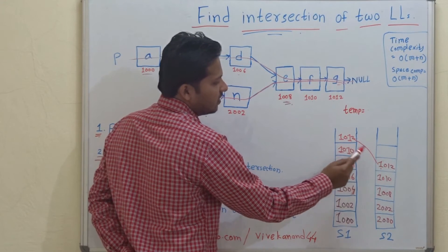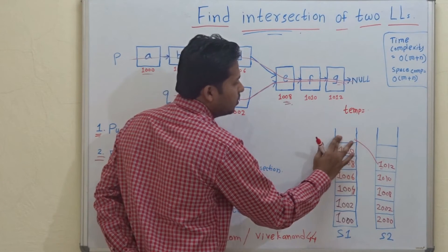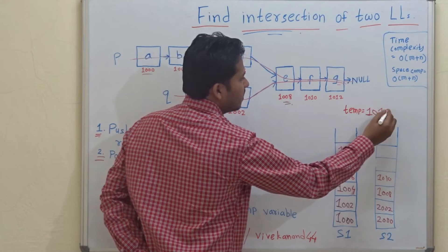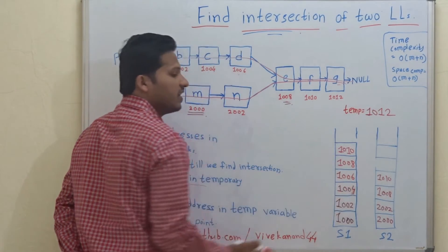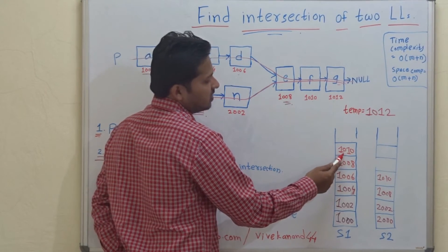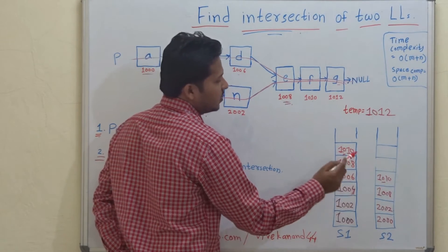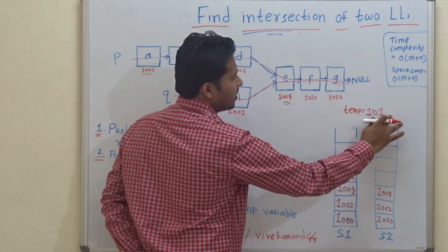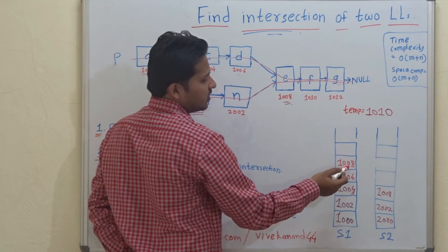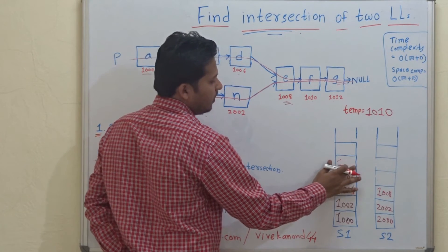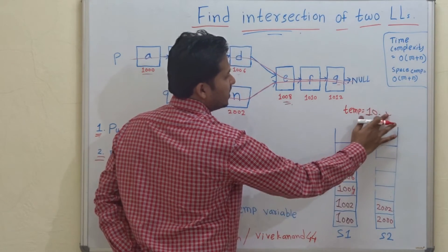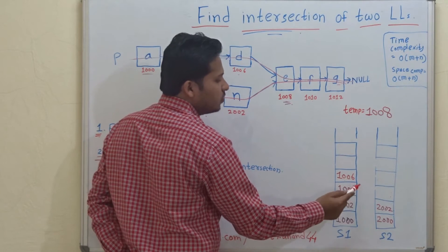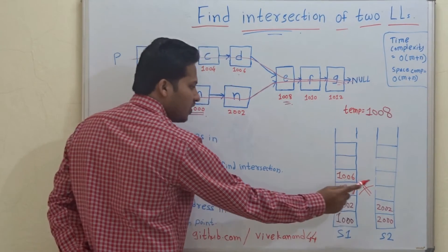Since the addresses 1012 are equal, we store that address in the temporary variable. Next, we pop 1010 and 1010 — also equal, stored in the temporary variable. Then we pop 1008 and 1008 — equal again, stored in the temporary variable. Next, we pop 1006 from stack one and 2002 from stack two — they are not equal.